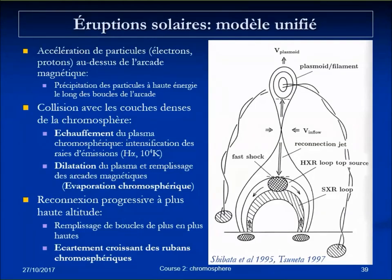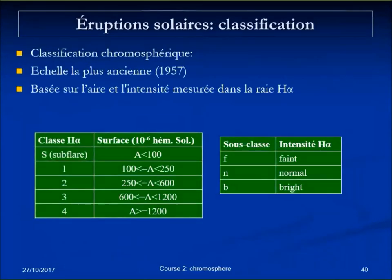The chromospheric emission was the first way — even before the space era — to characterize the strength and location of flares, based on H-alpha images. An index based on the area of the flaring region — essentially the area and brightness of the ribbons — is still in use today, although now we also have X-ray fluxes coming more directly from the coronal part of the flaring region.